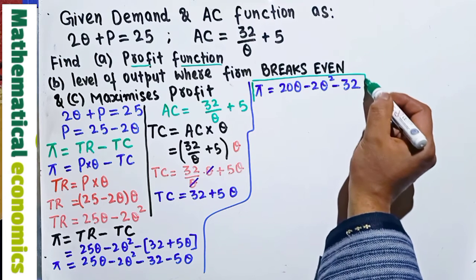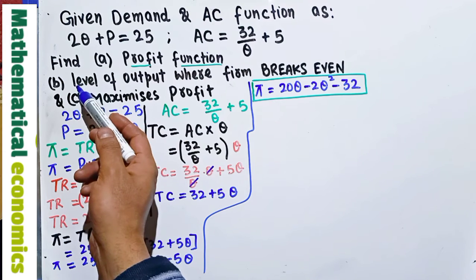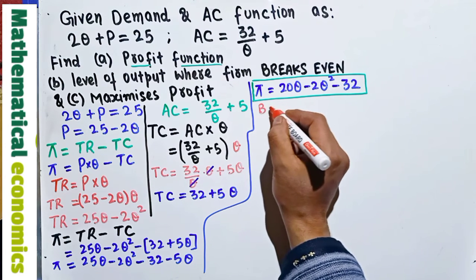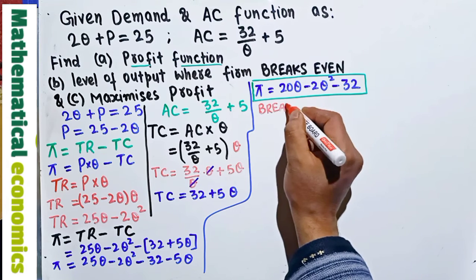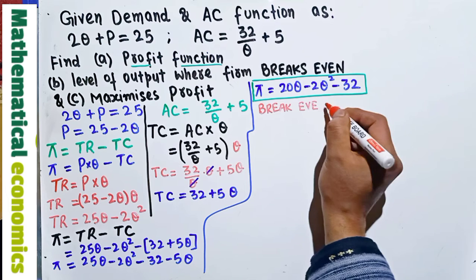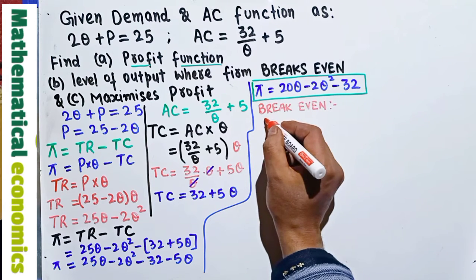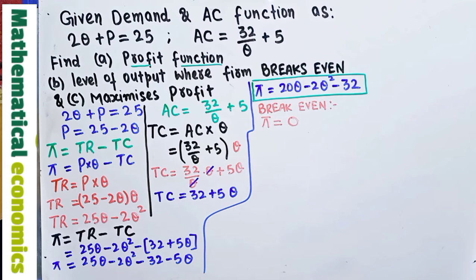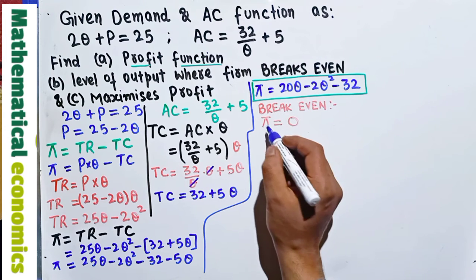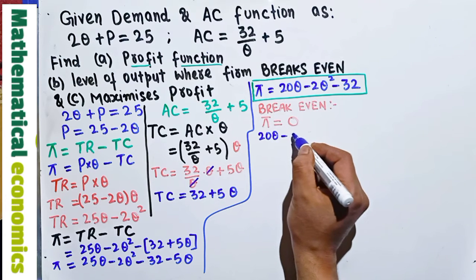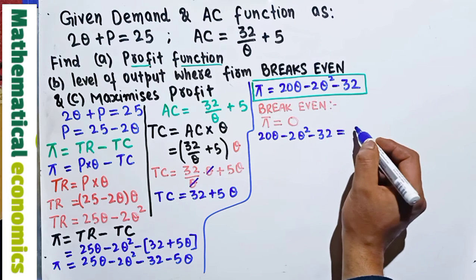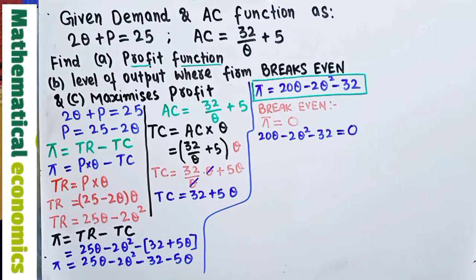The next question asks us to find the output level where the firm breaks even. The breakeven point is where the profit of the firm equals zero. So we take the profit function and equate it to zero: 20Q minus 2Q² minus 32 = 0.